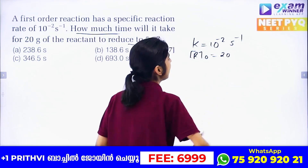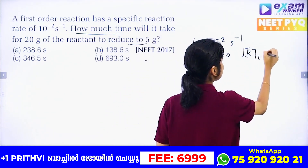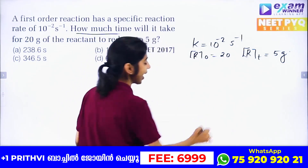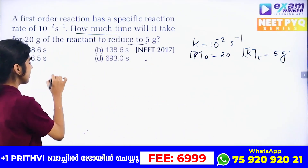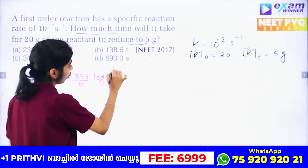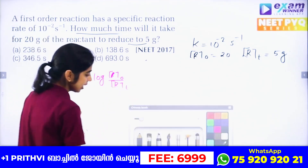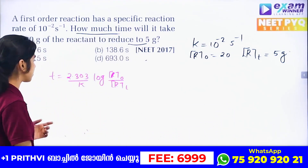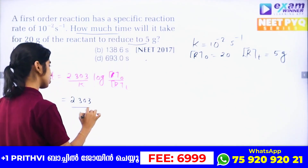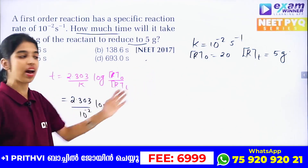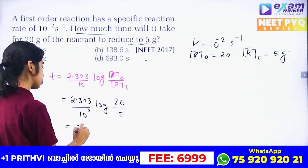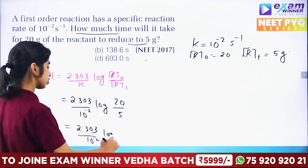R₀ is 20 grams of the reactant and Rt is 5 grams of the reactant. We use the first order rate equation: t = 2.303 / k × log(R₀/Rt). Substituting: 2.303 divided by 10⁻² times log(20/5). Log(20/5) = log 4.